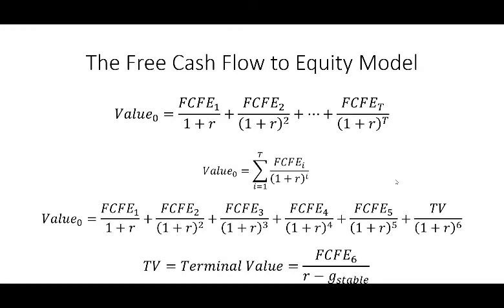The terminal value I'm going to use is a popular one. You assume a free cash flow to equity for period six, and divide it by the discount rate minus g-stable, where g-stable is a stable growth rate from that point forward. Most people choose a growth rate of anywhere from one to four percent — most commonly about two or three percent. In the long run, it's going to be hard for businesses to grow their free cash flow at a rate that exceeds GDP growth.